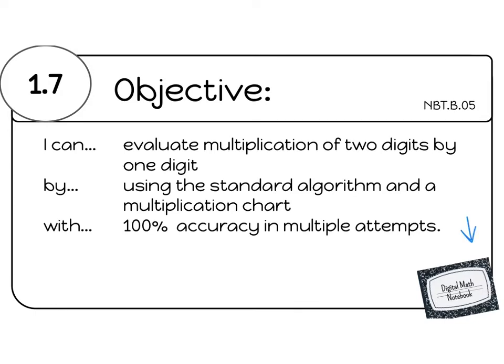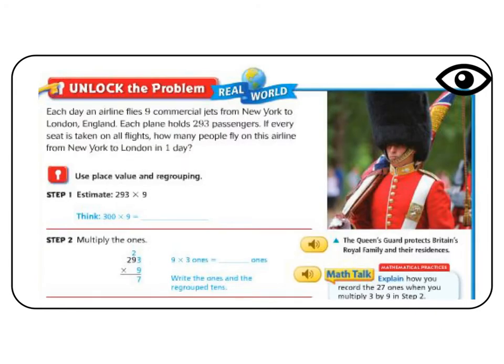Let's begin with unlock the problem. It says each day an airline flies nine commercial jets from New York to London, England. Each plane holds 293 passengers. If every seat is taken on all flights, how many people would fly on the airplane from New York to London in one day? The first thing that we're going to do is estimate. We're going to use some rounding to get to a number that is close and reasonable.